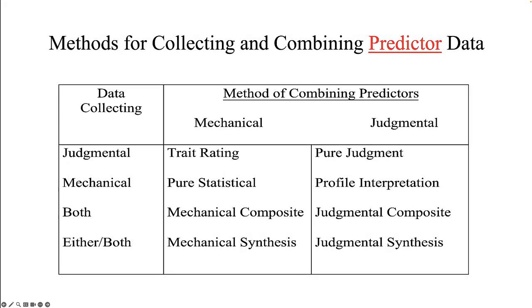In the selection process, we collect job-related information on applicants to predict who should be hired. Data is collected through one or more selection tools, such as applications, tests, or interviews. Some tools are mechanical or objective in nature, such as a paper-and-pencil cognitive ability test, while other tools use expert judgments and scoring, such as an interviewer scoring a candidate on interview answers. Judgmental data is subjective, whereas mechanical data is objective.